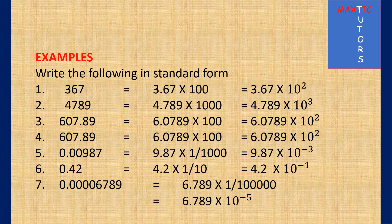Look at examples here. Write the following in standard form. 367 is 3.67 times 10 raised to power 2. You assume there is a decimal point at the end. Shift the decimal backward so that what you have is a number less than 10. 367 is more than 10; 36.7 is also more than 10. The number between 1 and 10 would be 3.67, and because you shifted the decimal backward 2 times, it is times 100, which is 10 raised to power 2.